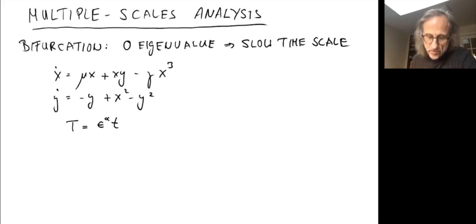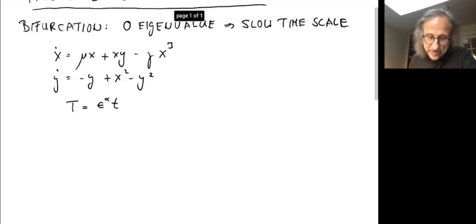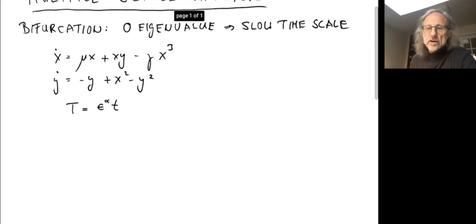But how do I find out what α should be? Also, I need to expand the amplitudes in epsilon and I need to expand my control parameter in epsilon. In perturbation methods, that's often kind of like a guessing game, which is not much fun.